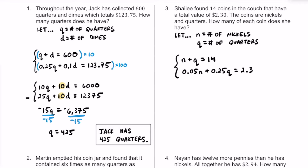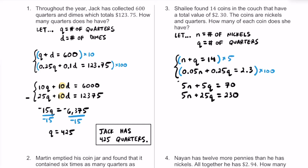Just like in the last few examples, I'll clear the decimals by multiplying the bottom equation by 100, giving us 5N plus 25Q equals 230. I'll use elimination and eliminate the N's. Multiplying the top equation by 5 on both sides gives 5N plus 5Q equals 70.